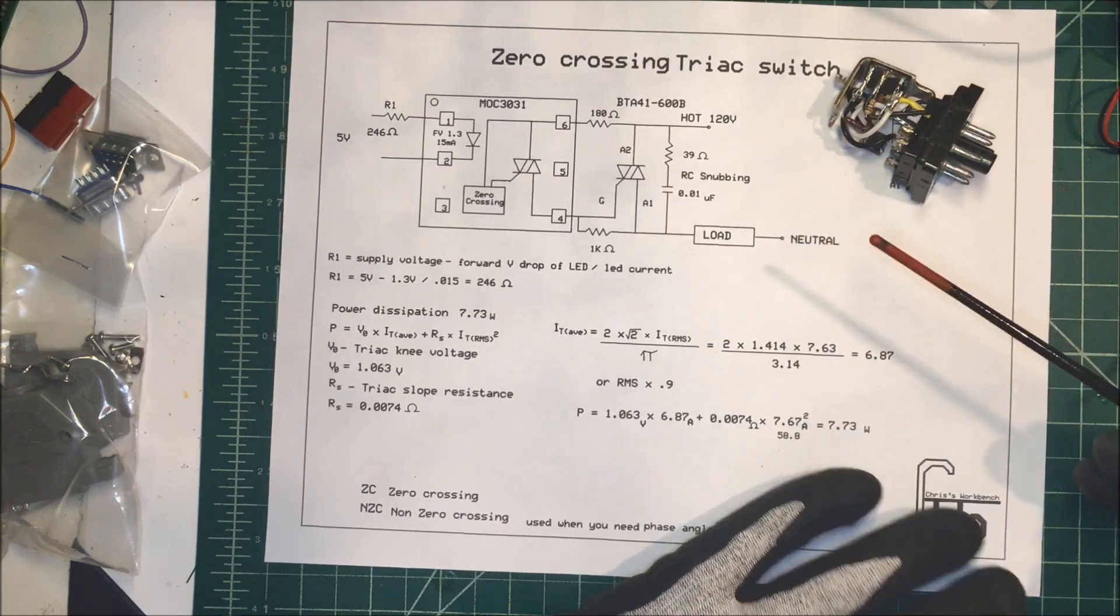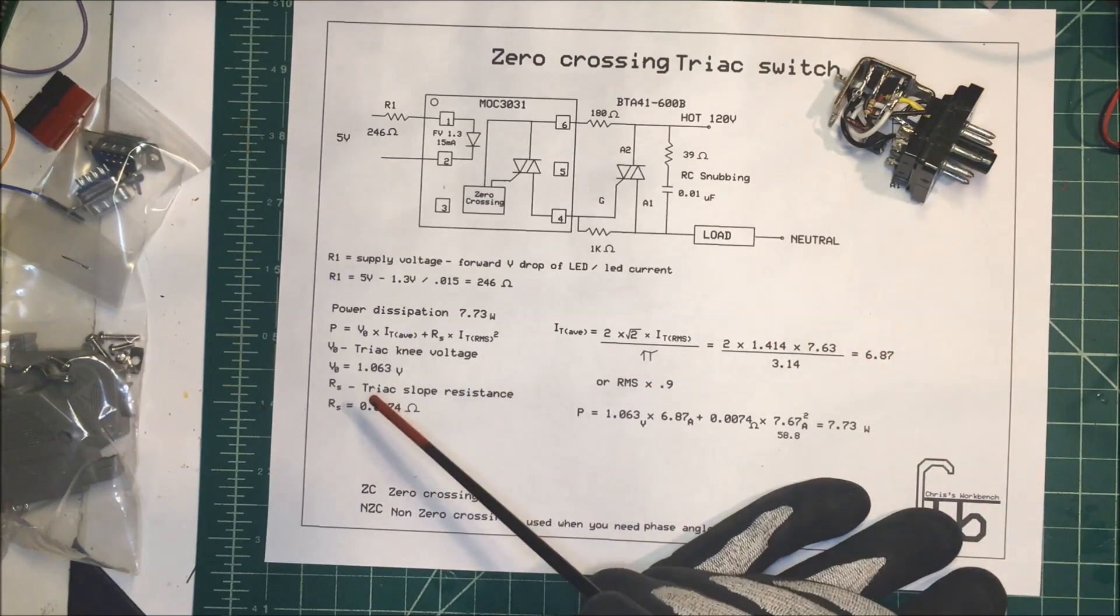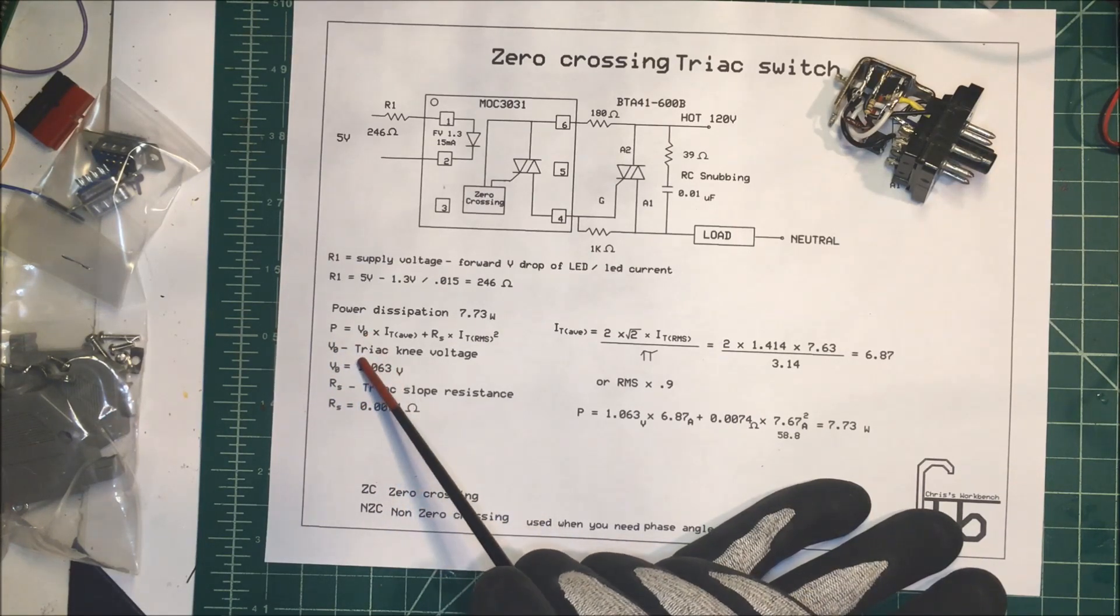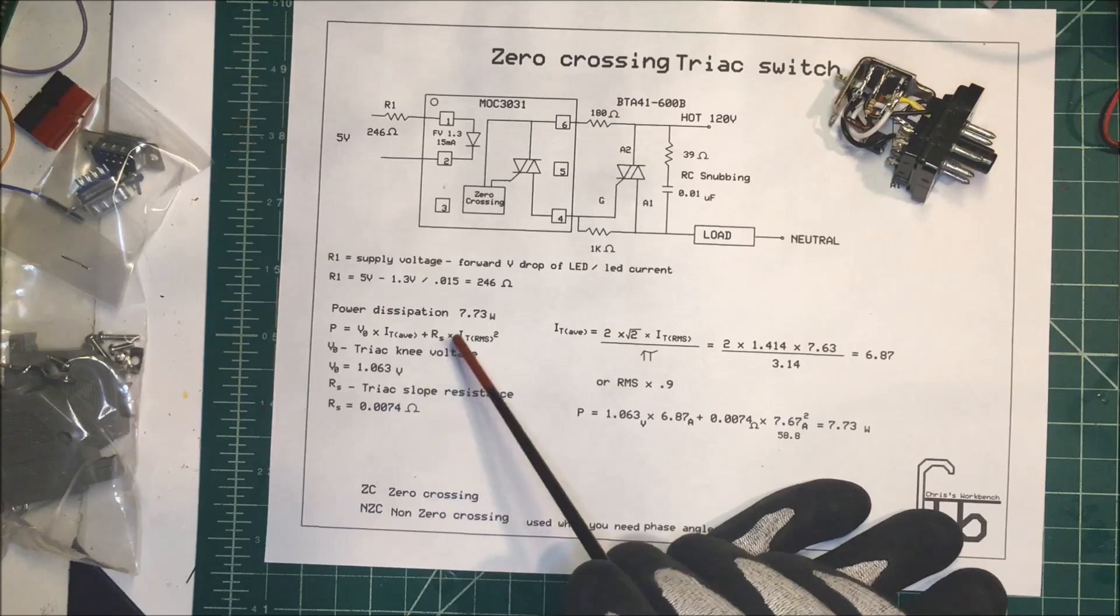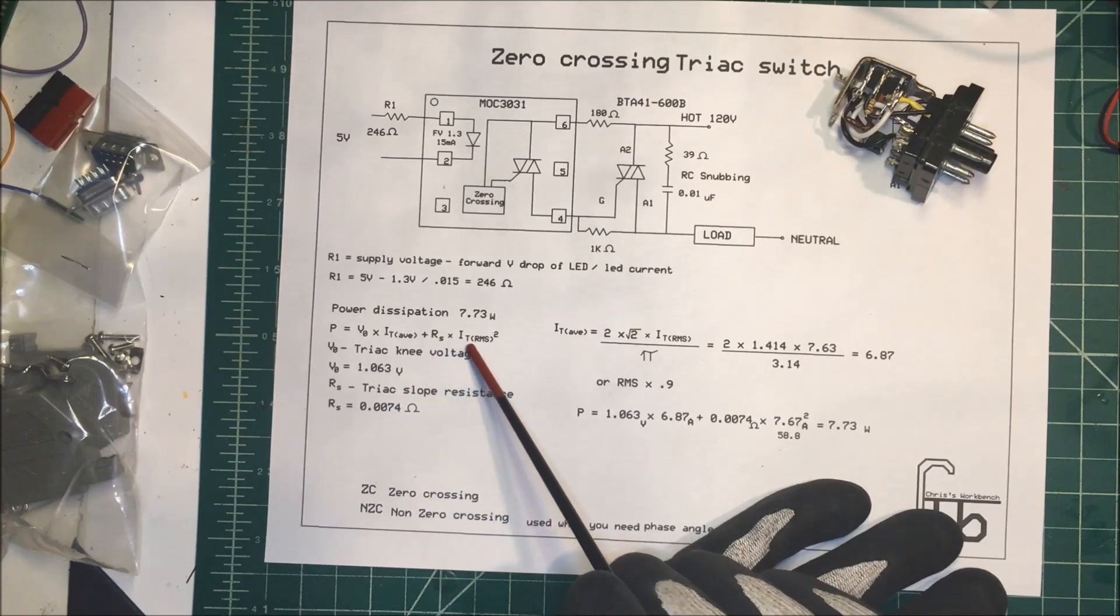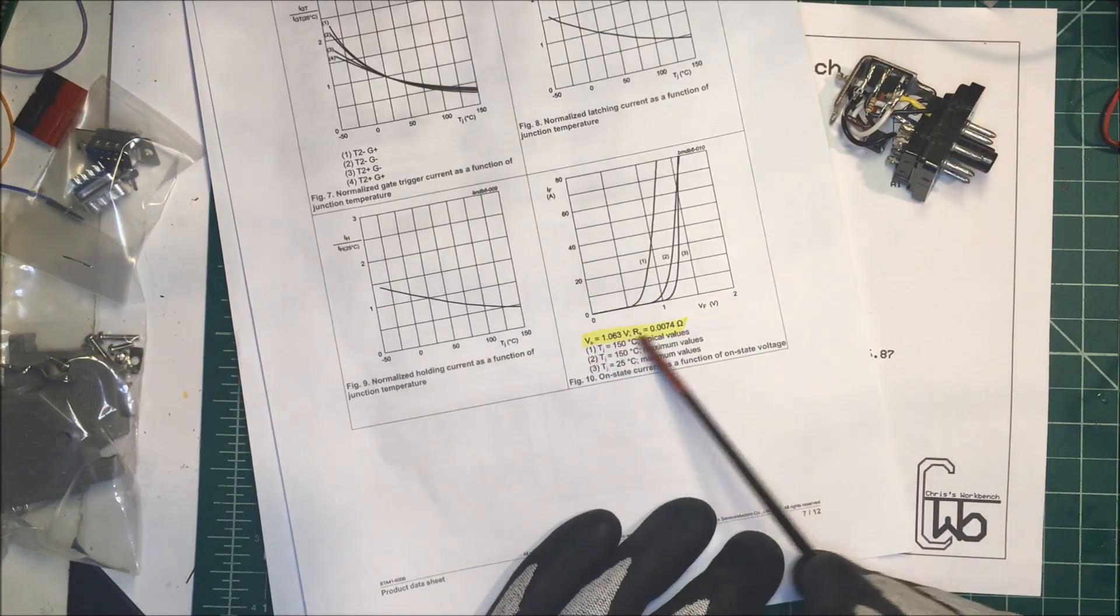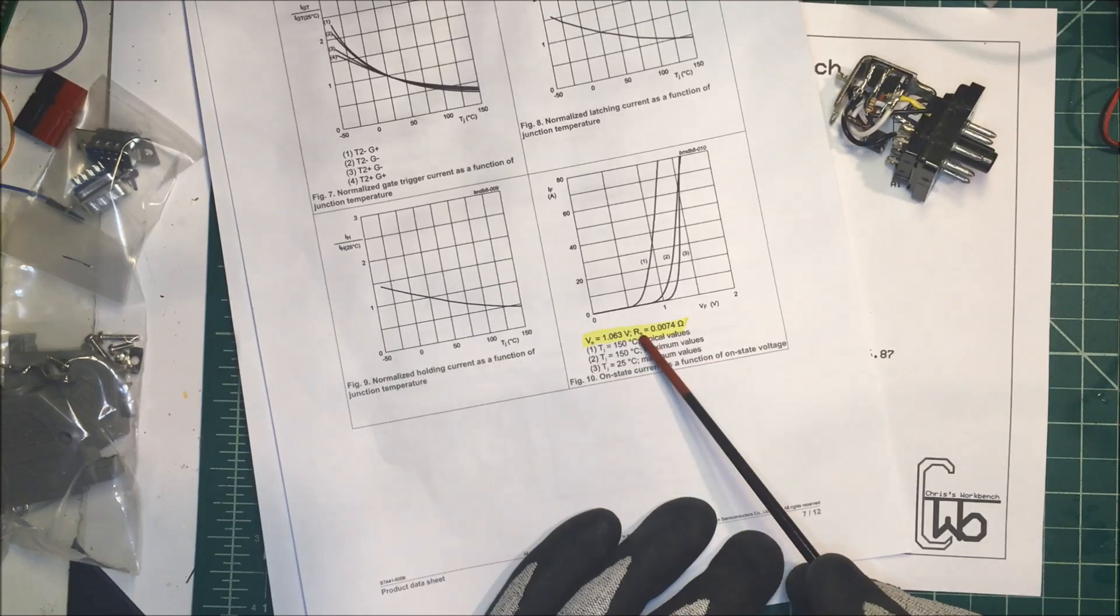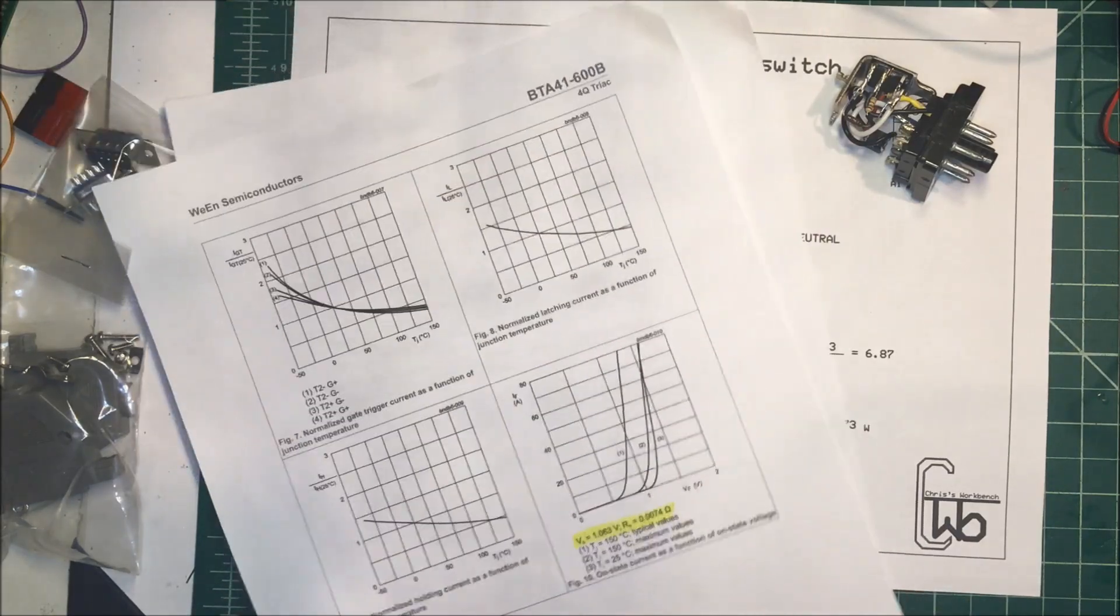So instead of being lazy and just guessing at it, I thought I'd figure out what the actual wattage was - the power dissipation. In order to do that, we take the power dissipation equal to V_zero times the average current, plus r_s times the RMS current squared. Now this V_zero, which is your triac knee voltage, and r_s, which is your triac slope resistance, are in the datasheet. This V_s is equal to 1.063 volts and the r_s is 0.00744 ohms.